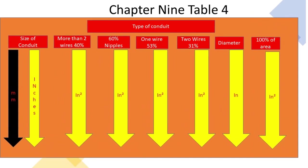When we get to Chapter 9 Table 4, we'll find that all of these tables look almost identical — the only distinction is the name of the type of conduit at the top. The very first one is EMT, then it goes down to familiar types: RMC, Schedule 80, Schedule 40, and others. In our pro program we have a Strategic Highlighting Video that shows you how to highlight these tables to make them pop.